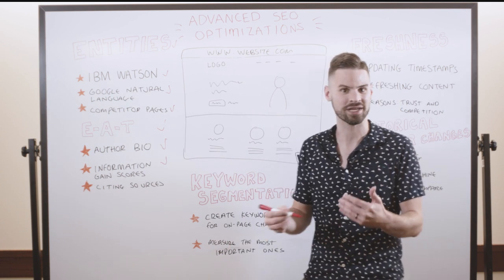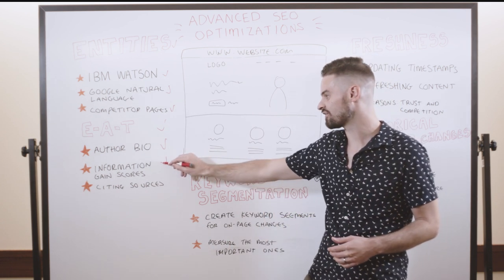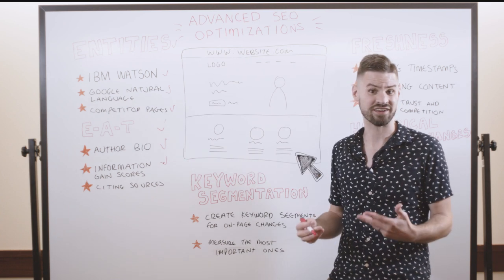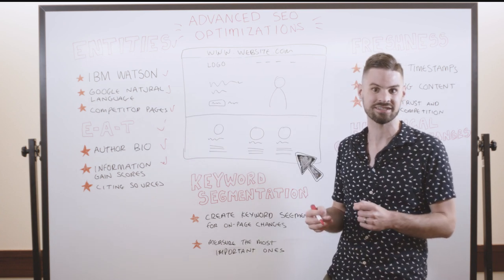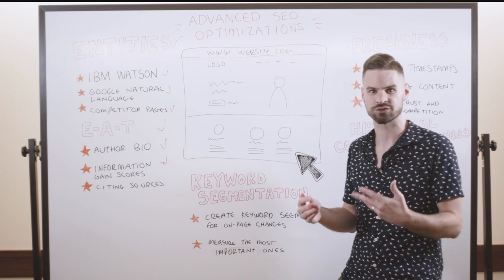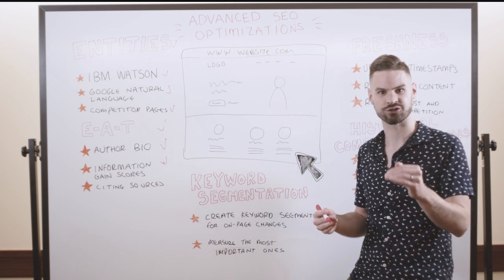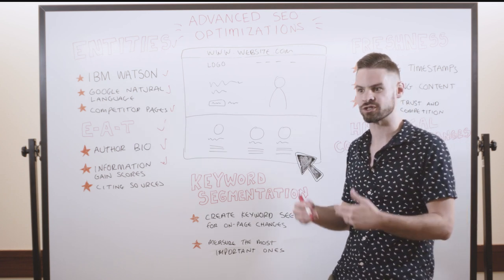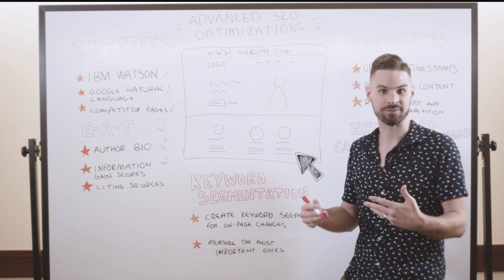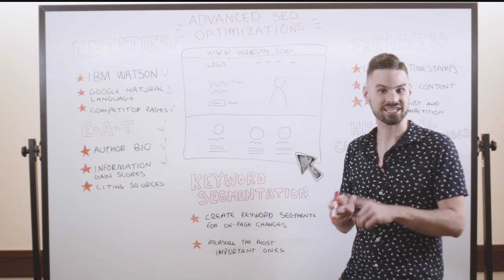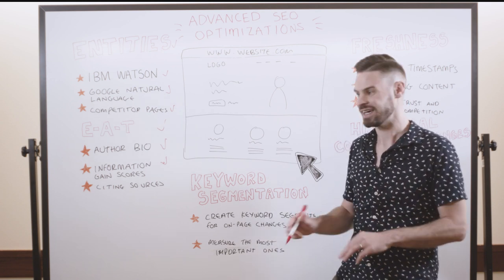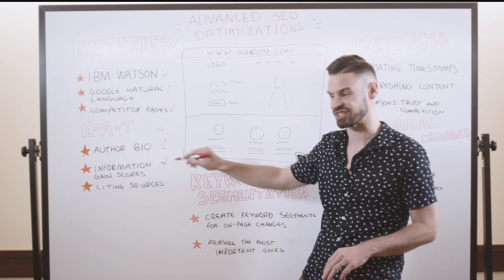Another thing I love to think about with on-page optimizations is this concept of information gain scores. It's one of my favorite patents analyzed by Bill Slawski, where he talks about the fact that Google looks to reward content that adds to the search results and doesn't just repeat what's already out there. So think about where you can leverage your own unique expertise, data, and insights to benefit from this concept of information gain scores.